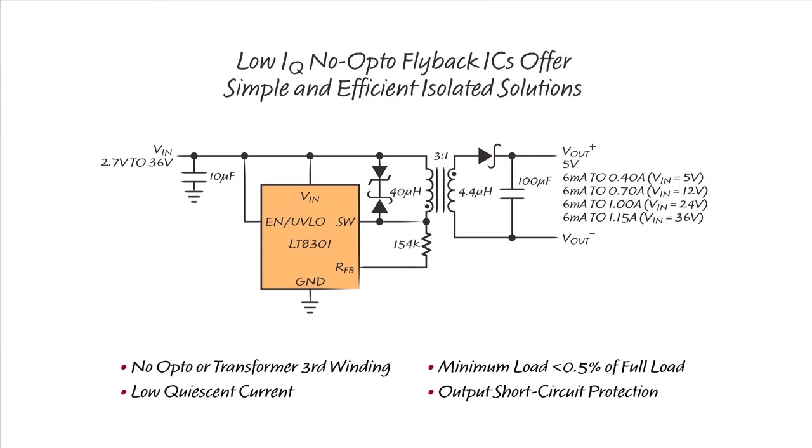Our Low IQ No Opto Flyback ICs eliminate opto-isolators or transformer third windings by sampling the isolated output voltage directly from the primary side switch node waveform, thereby simplifying the isolated power supply solutions. Internal compensation and internal soft start further simplify application solutions and reduce the external component count.